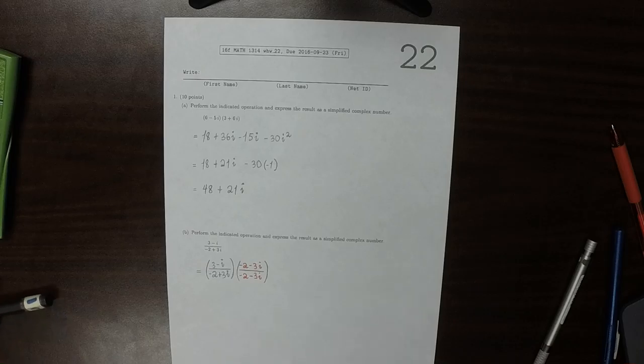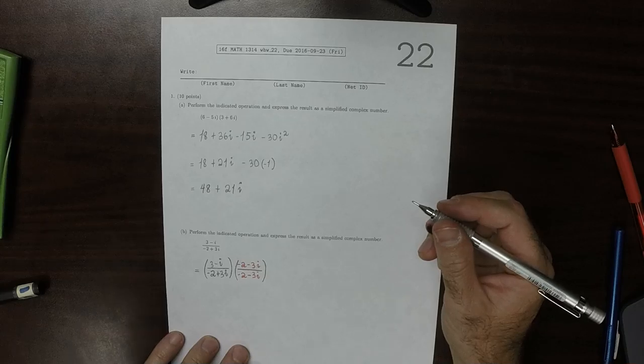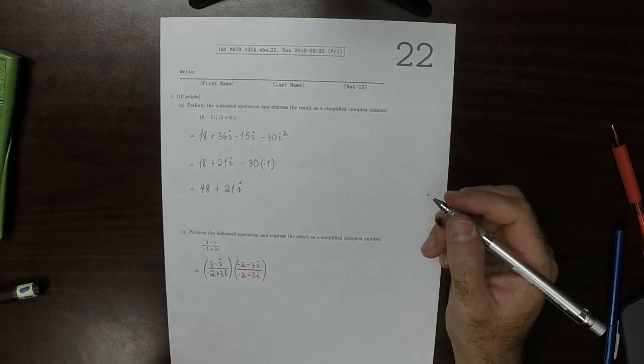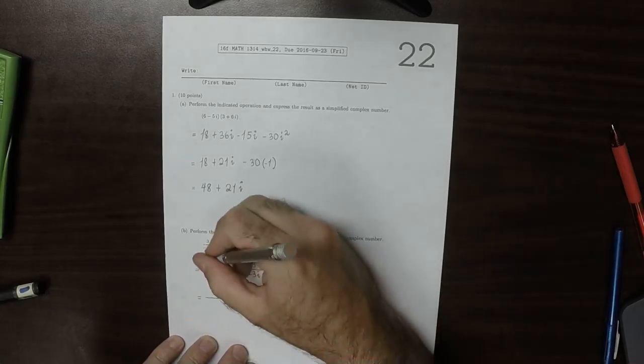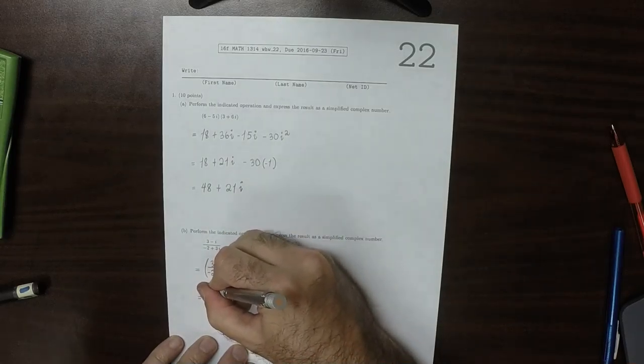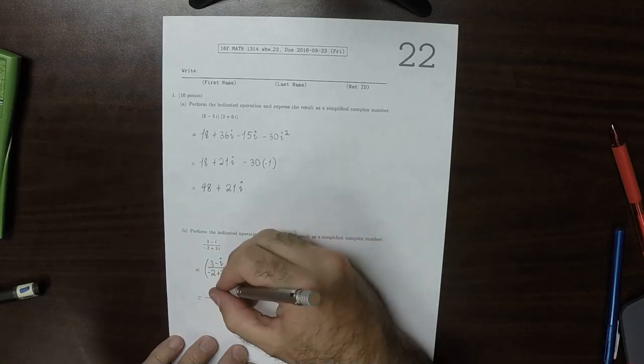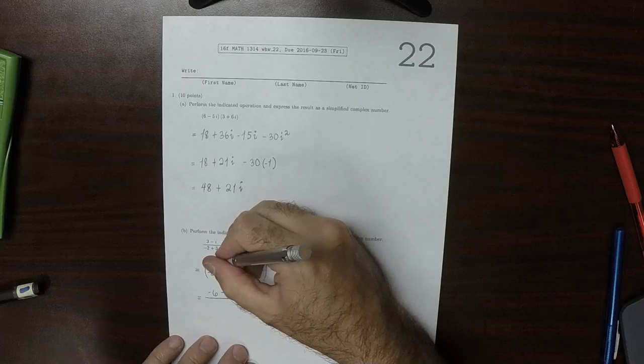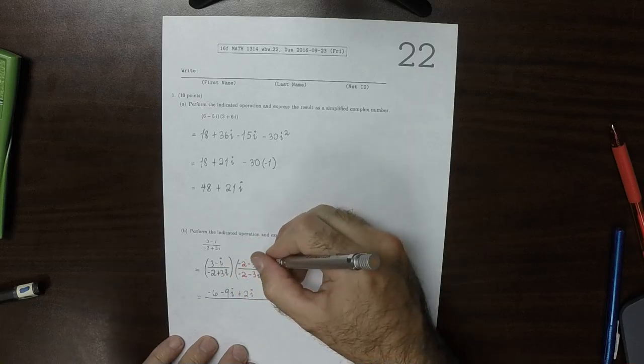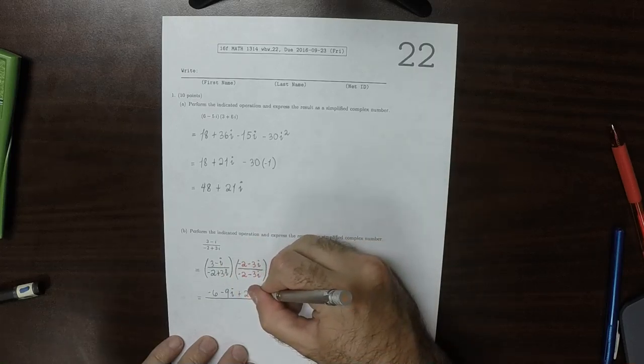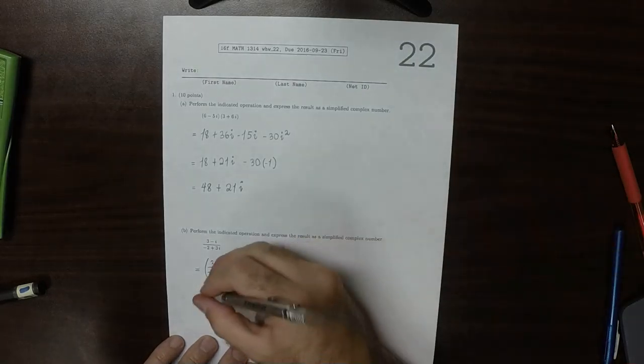Let's carry this out. In the numerator, FOIL gives 3 times negative 2, that's negative 6, then 3 times negative 3i is minus 9i, negative i times negative 2 is plus 2i, and negative i times negative 3i is plus 3i squared.